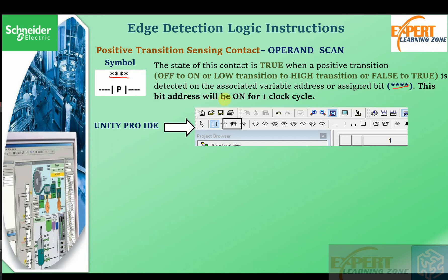This bit address will be on for one clock cycle. It means that if there is a change in the logic on the left side of this contact from low to high transition, then there is a logic one that moves to the right side of the contact for one clock cycle only. In the next clock cycle, if there has been no change, it stays low.